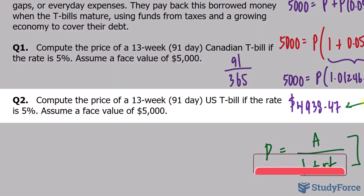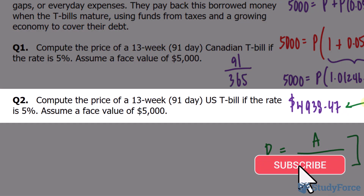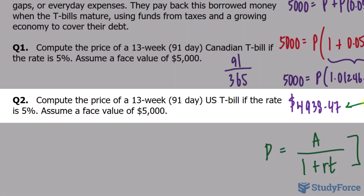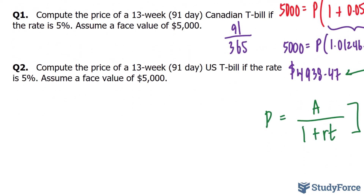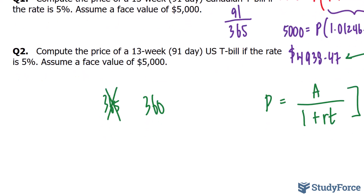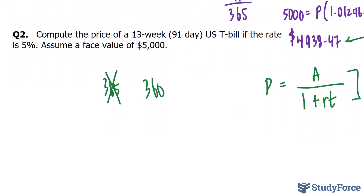Question 2 reads: compute the price of a 13-week, 91-day US T-bill if the rate is 5%. Assume a face value of $5,000. There are two major differences from the Canadian system: first, the US uses 360 days per year rather than 365. Second, T-bills in the United States use a discount loan model.